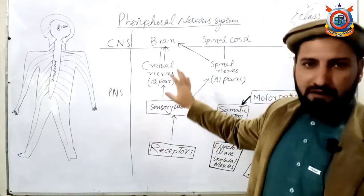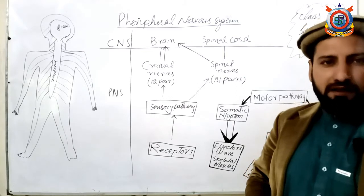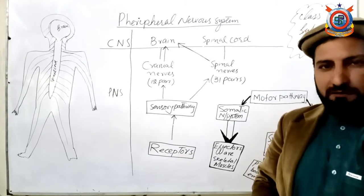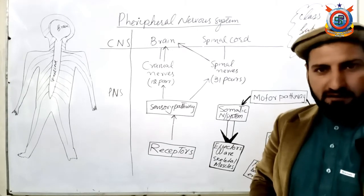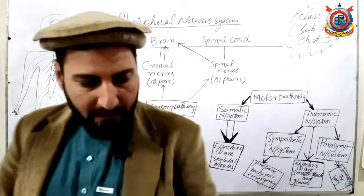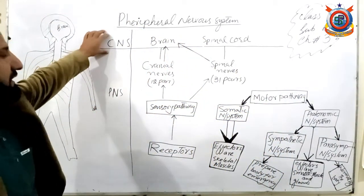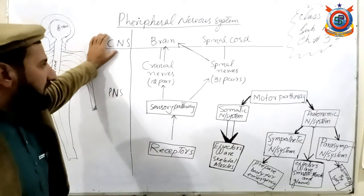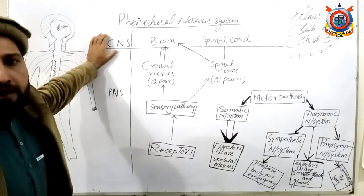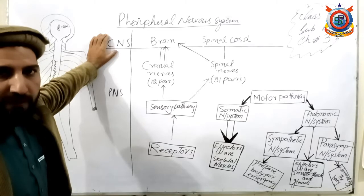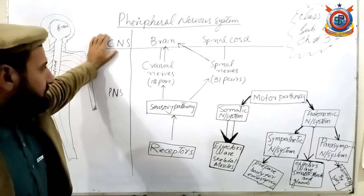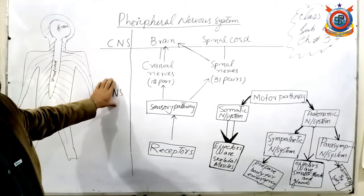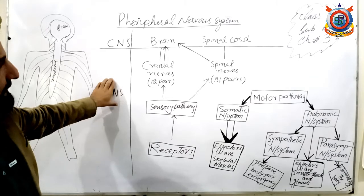اب اپنے nervous system کو سمجھنے کے لئے آپ نے اس diagram کو سمجھنا ہے — میں نے ایک diagram بنایا ہوا ہے جو آپ کو explain کرے گا کہ آپ کے body کے اندر آپ کا nervous system کیسے کام کرتا ہے۔ Nervous system in our body consists of Central Nervous System and Peripheral Nervous System۔ Central Nervous System consists of brain and spinal cord — brain آپ کے skull میں موجود ہے اور spinal cord آپ کے backbone کے اندر۔ Brain اور spinal cord سے nerves نکلتے ہیں جو Peripheral Nervous System بناتے ہیں۔